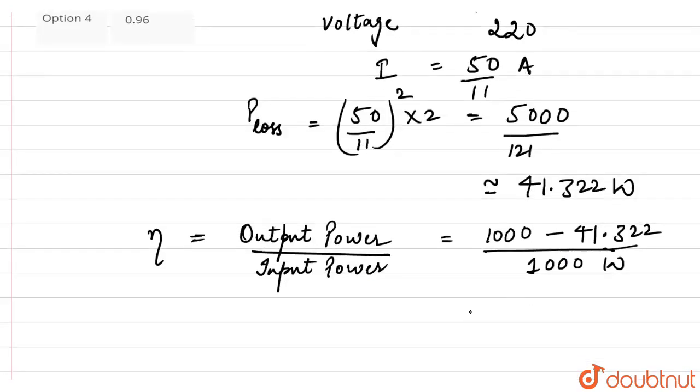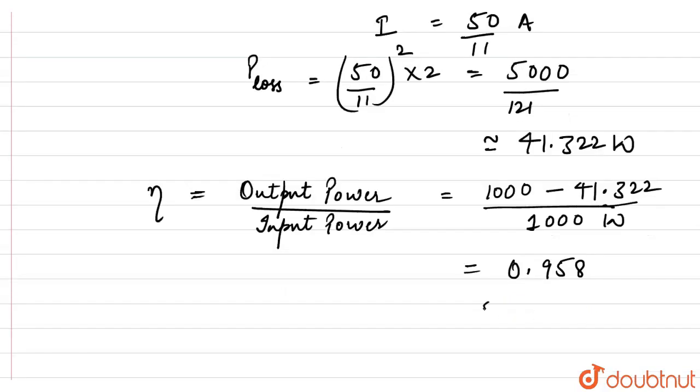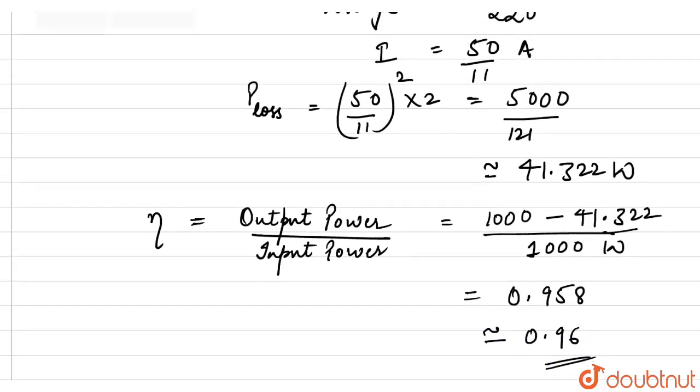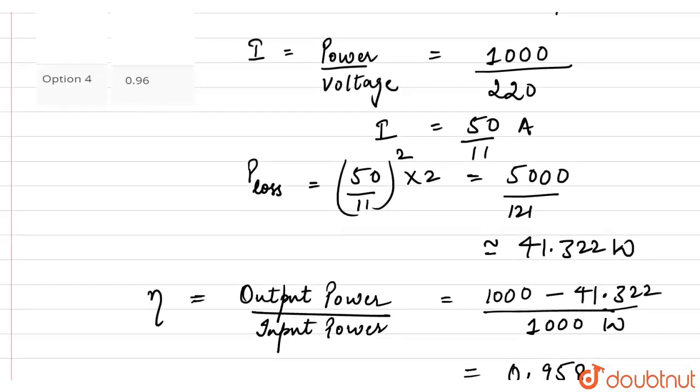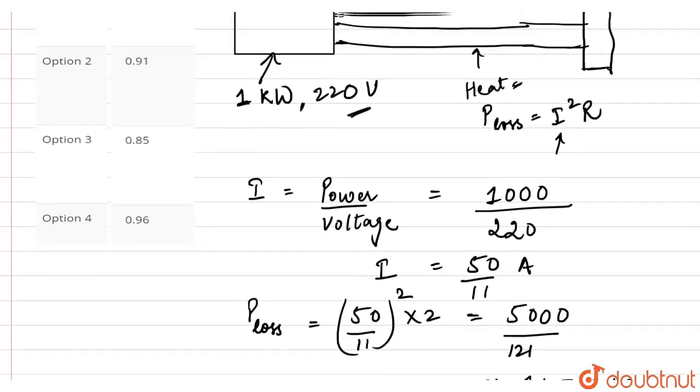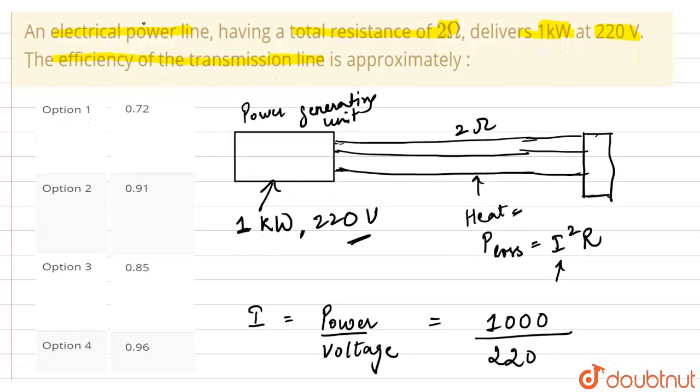This comes out to be around 0.958, or approximately 0.96. The efficiency is approximately 96%. Matching with the options, we see that option 4 is correct.